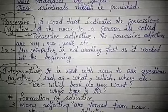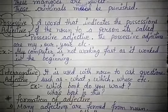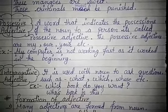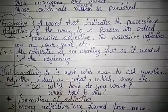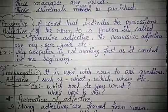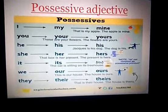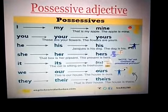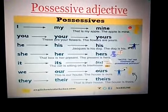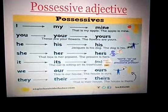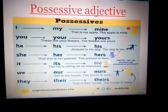Let's study what is possessive adjective. A word that indicates the possession of the noun to a person is called a possessive adjective. The possessive adjectives are my, your, her, etc. For example: 'That is my apple.' 'These are your flowers.' 'That box is her present.' Here, my, your, and her are possessive adjectives.